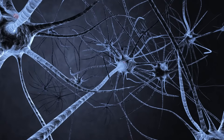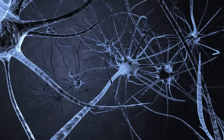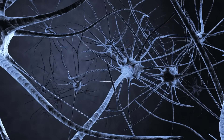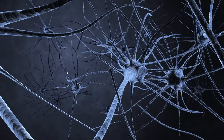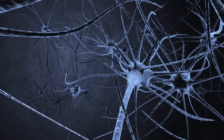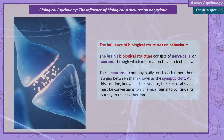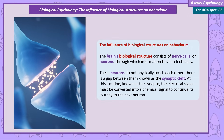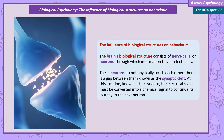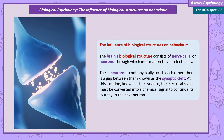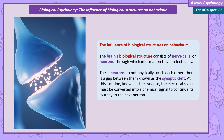The biological structure of the brain is constructed of nerve cells. Information travels across these nerve cells in the form of electricity. However, these nerve cells don't quite touch. The gap between two nerve cells is called the synaptic cleft. At this point — the synapse — the electrical message has to be converted to a chemical signal, which leads us to the next section.